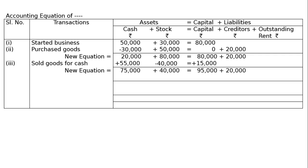The new equation after transaction three: cash rupees 75,000, stock rupees 40,000, capital rupees 95,000, and creditors rupees 20,000.